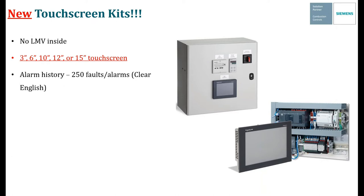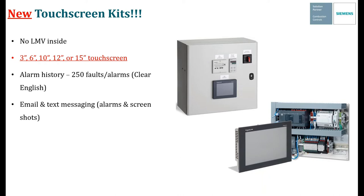Each panel has an alarm history that saves up to 250 faults and alarms, all written out in clear English — no code to look up, it just says right there on the screen what the alarm was. You can also add email and text messaging. If you connect these panels to the internet, you can program up to six different email or text messaging phone numbers, and whenever the boiler goes into an alarm, it will automatically send an email or text to those addresses. You can also grab screenshots from the touchscreen and email those pictures out for troubleshooting.